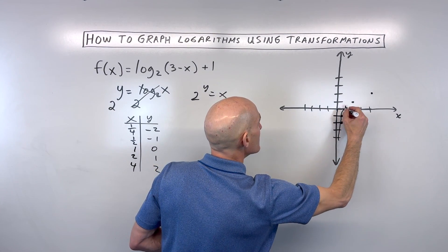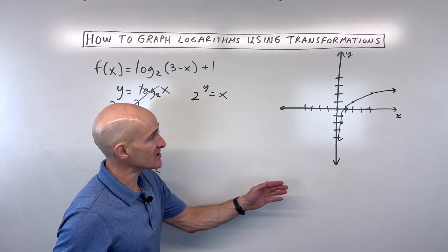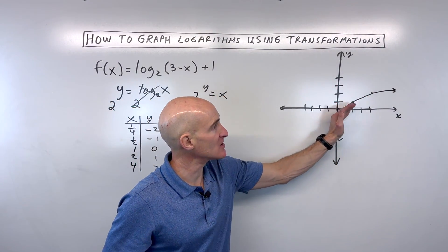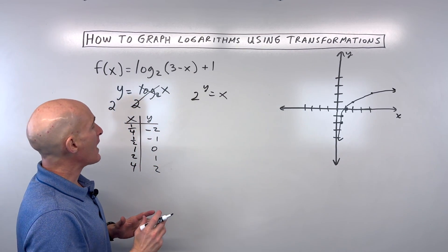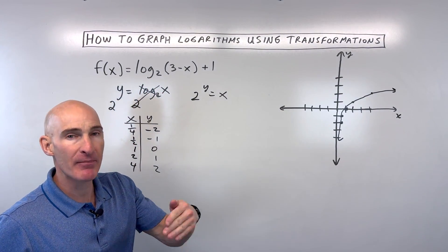So you can see that this graph, our parent function, is just what we're used to when we're graphing logs. It's getting closer and closer to the y-axis. It's going up slower and slower. But now what we want to do is we want to try to build up this equation step by step.